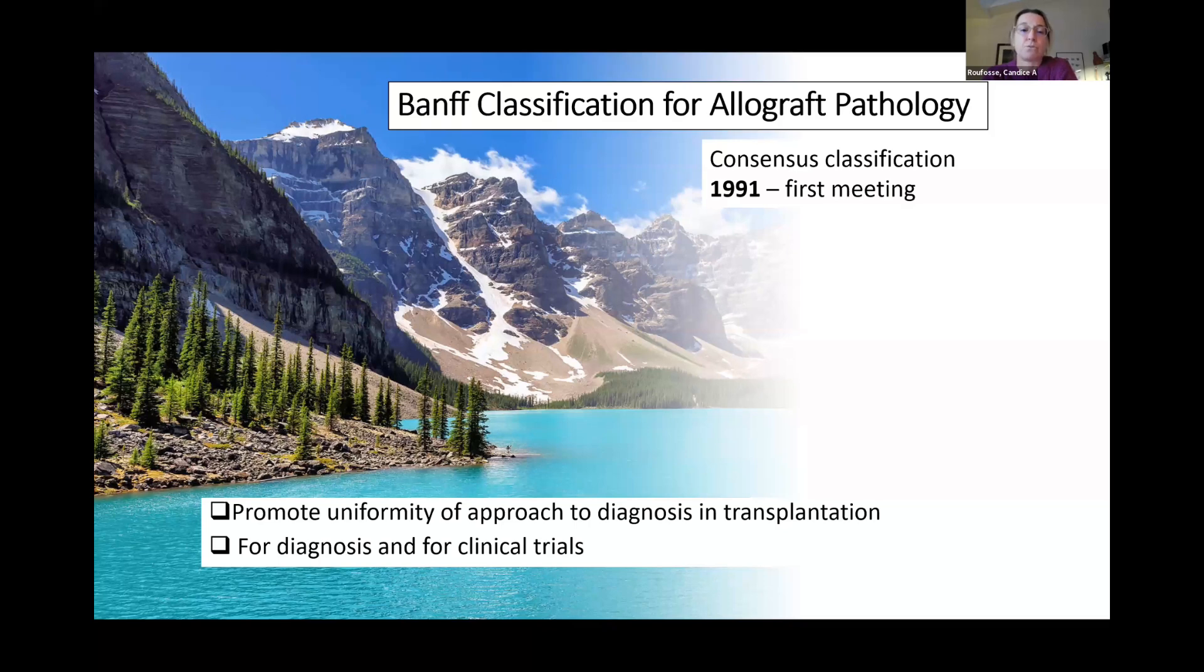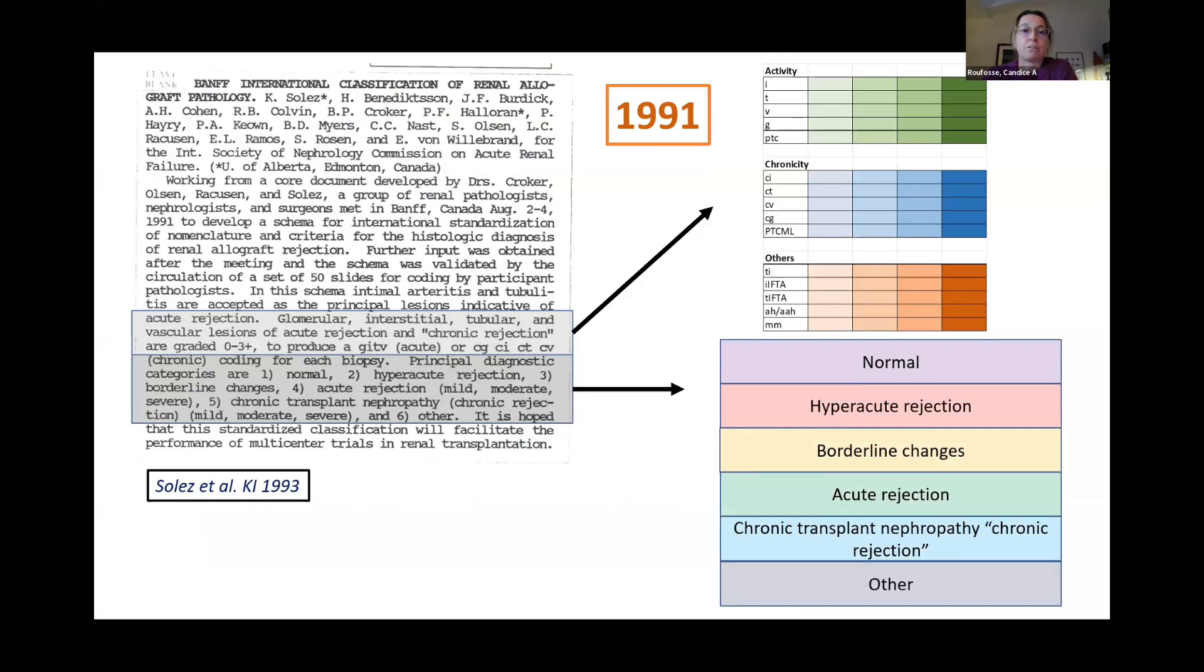And the Banff classification has gone on to be very successful and has essentially kept the structure that it had when it was first developed in 1991, which I've just taken from this abstract from this first meeting, and comprises two components, one of which is a granular scoring system.